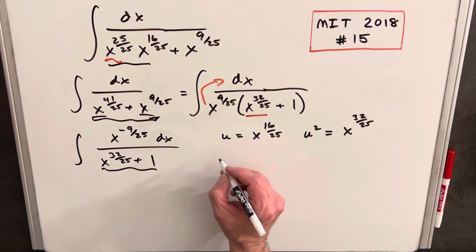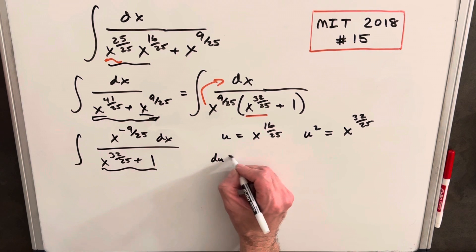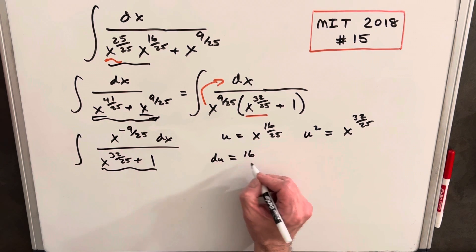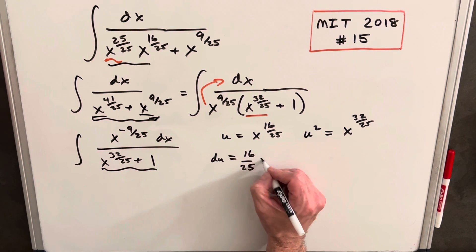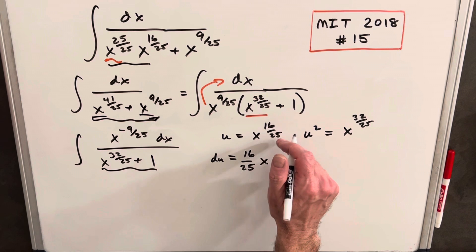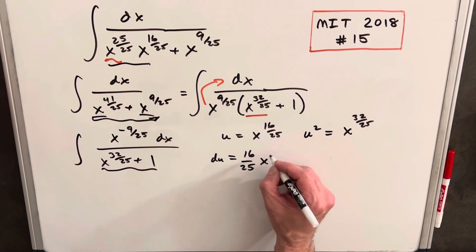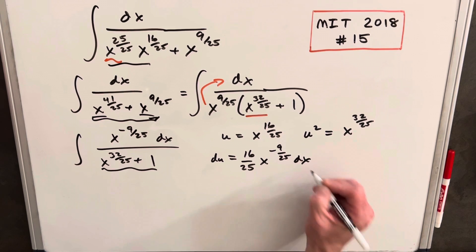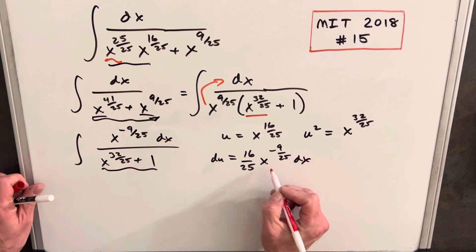Let's see what our du is going to be. Taking the derivative of this we are going to end up with 16 over 25 x to the minus 9 over 25 dx, and that's perfect because this is going to match this right here.